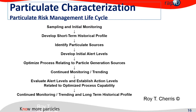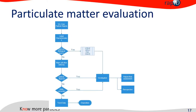This slide from Roy shows that when you look into the 'shoe box of rejects' during sampling and initial monitoring, you can develop a short-term historical profile — you have different categories of particles that you find and start identifying their sources. Then you can develop initial alert levels and optimize the process, going on with monitoring and training. After evaluating and establishing alert levels, you can set action levels that trigger action in certain critical quality aspects.